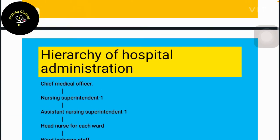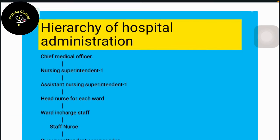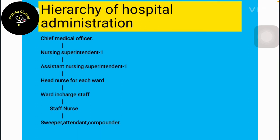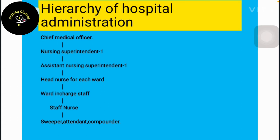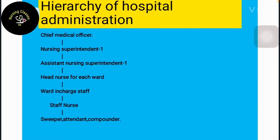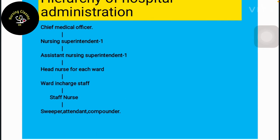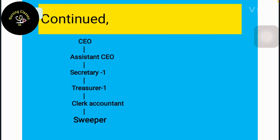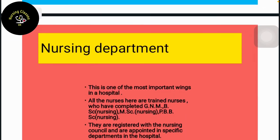The hierarchy of hospital administration is as follows: Chief Medical Officer at the top, then Nursing Superintendent, Assistant Nursing Superintendent, Head Nurse for each ward, Ward In-charge, Staff Nurse, then Sweeper, Attendant, and Compounder. The administrative side includes the CEO, Secretary, Treasury, Clerk, Accountant, and Sweeper, alongside the nursing department.